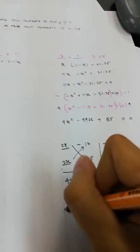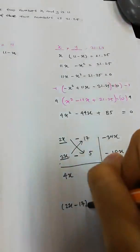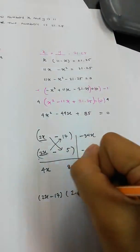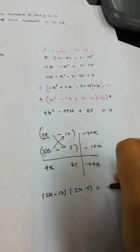So, good. So therefore, 2x minus 17, this is the factor, times 2x minus 5 equals to 0.